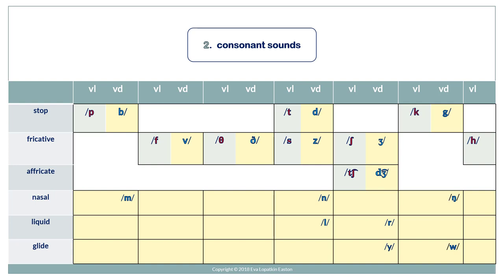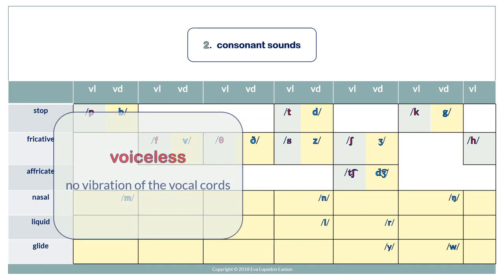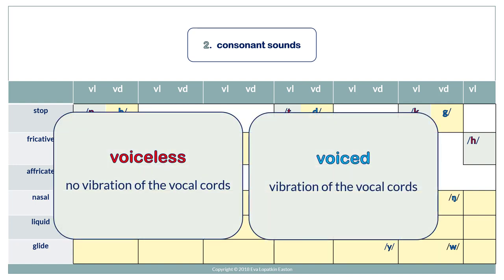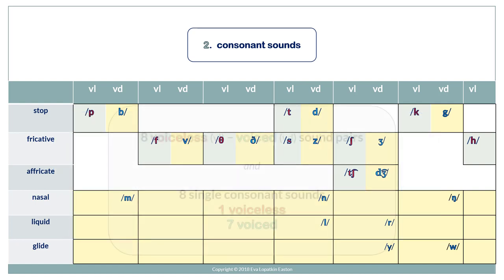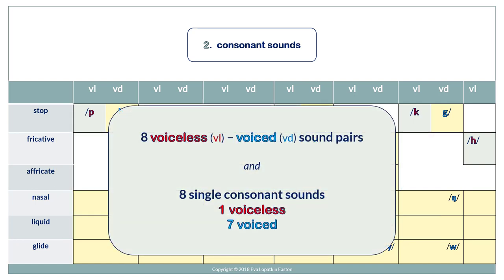What about consonant sounds? Consonant sounds are both voiceless and voiced. There are eight voiceless-voiced sound pairs and eight single consonant sounds — one voiceless, seven voiced.